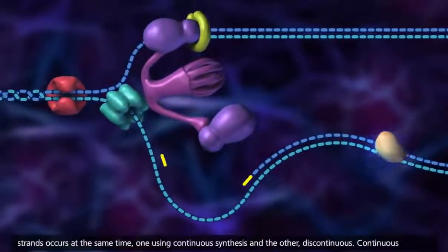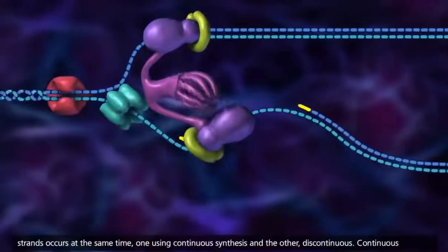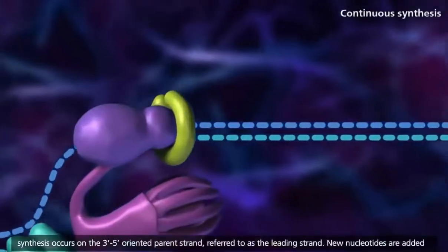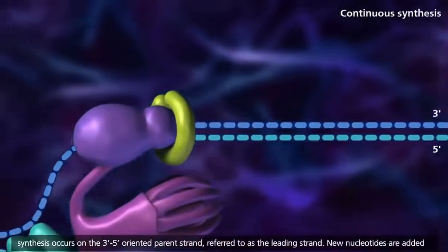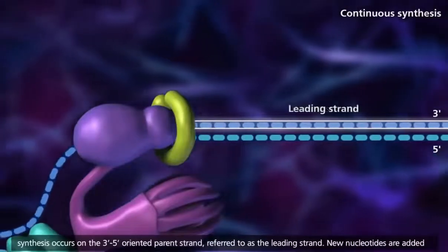Replication of both strands occurs at the same time, one using continuous synthesis and the other discontinuous. Continuous synthesis occurs on the 3' to 5' oriented parent strand, referred to as the leading strand.